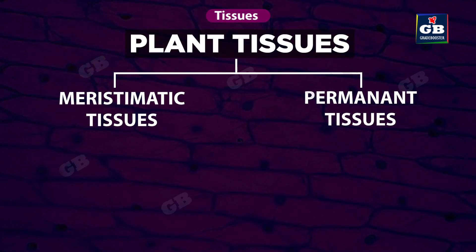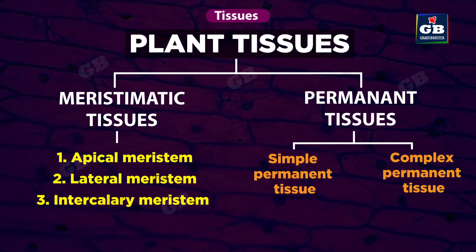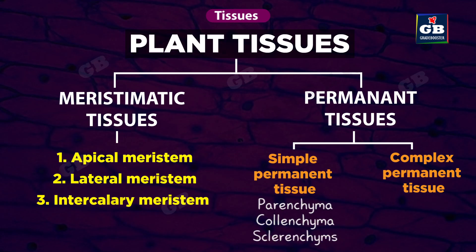Meristematic tissues are of three types: apical meristem, lateral meristem, and intercalary meristem. Permanent tissues are of two types: simple permanent tissues, which consists of parenchyma, colenchyma, and sclerenchyma; and complex permanent tissues, which consists of xylem and phloem.